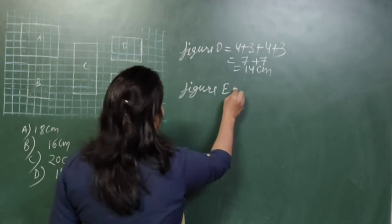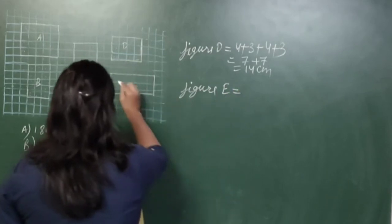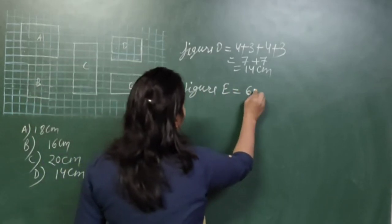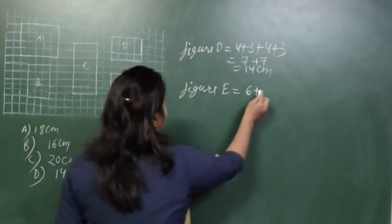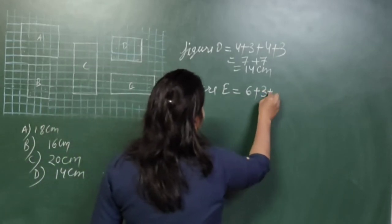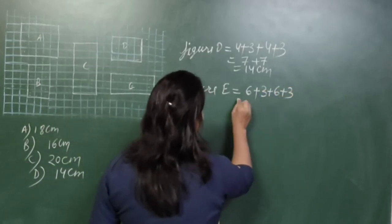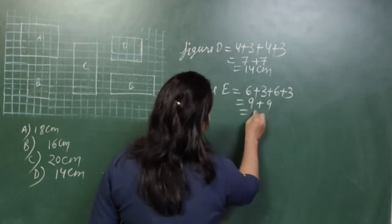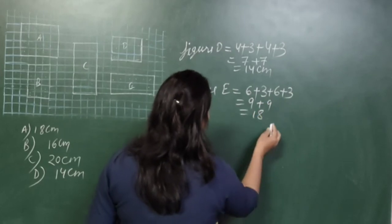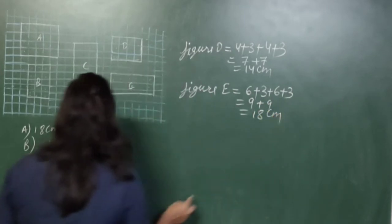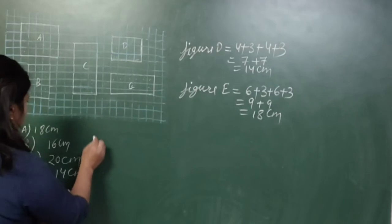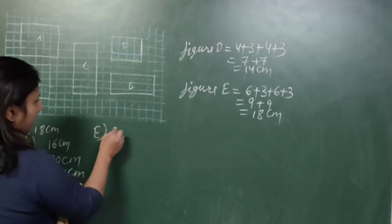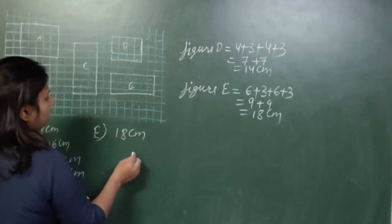Now figure E. Counting the boundaries: length is 6, breadth is 3. So 6 + 3 = 9, and 6 + 3 = 9, giving 9 + 9 = 18 centimetres. Figure E has a perimeter of 18 centimetres.